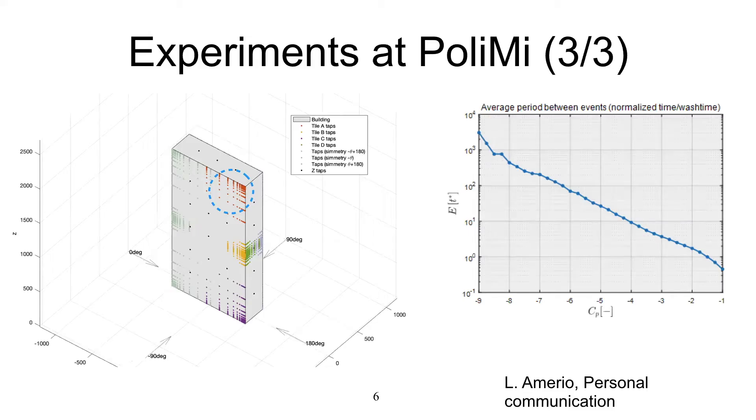The plot on the right is the average time between a pressure event that causes CP to go below the value on the x-axis. To make an example, in order to see a CP of minus six on average in that particular region, they had to wait in experiments 100 convected times. That's a very long time for CFD. Our laminar inflow results are for 30 convected times, not 100.